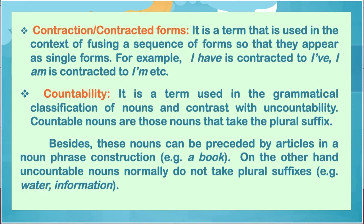Countability — it is a term used in the grammatical classification of nouns and contrasts with uncountability. Countable nouns are those nouns that take the plural suffix; besides, these nouns can be preceded by articles in a noun phrase construction — for example, 'a book.' On the other hand, uncountable nouns normally do not take plural suffixes — for example, 'water' or 'information.'